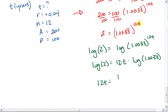Thus, 12T equals log of 2 divided by log of 1.00333.